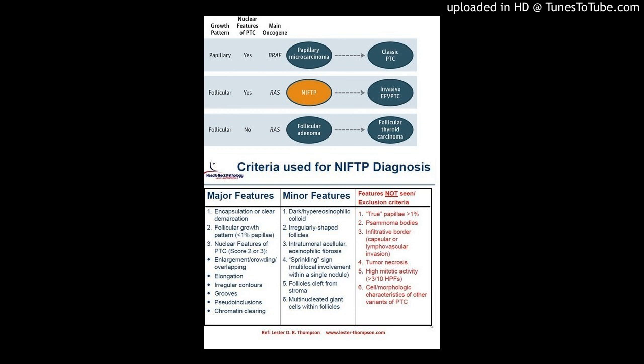The introduction of NIFTP affects the risk of malignancy (ROM), mostly in the Bethesda System for Reporting Thyroid Cytopathology (TBSRTC) categories. In a multi-institutional retrospective study, the authors investigated variations in the impact of a NIFTP diagnosis on the associated ROM for each TBSRTC category, with an emphasis on the influence of pathologist and institutional diagnostic thresholds on the ROM.